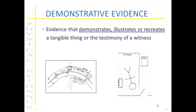The first type of evidence is demonstrative evidence, and this is going to be evidence that demonstrates, illustrates, or recreates a tangible item or the testimony of a witness. So in many instances, the crime scene sketch that might be done from a scene itself is going to be considered demonstrative evidence.